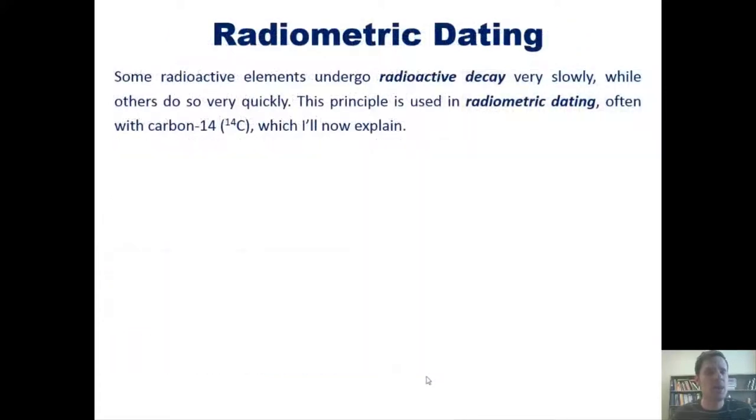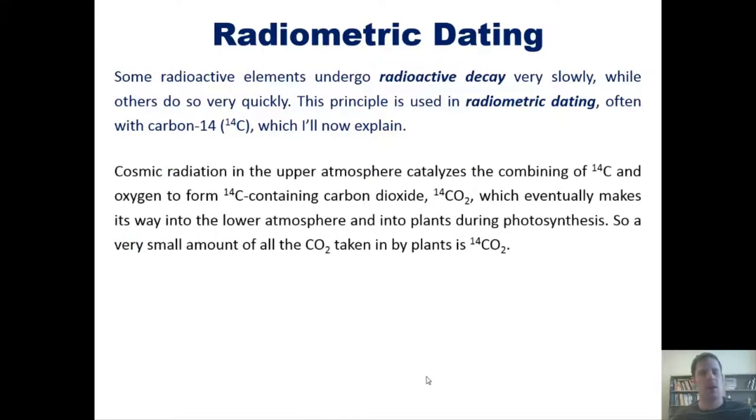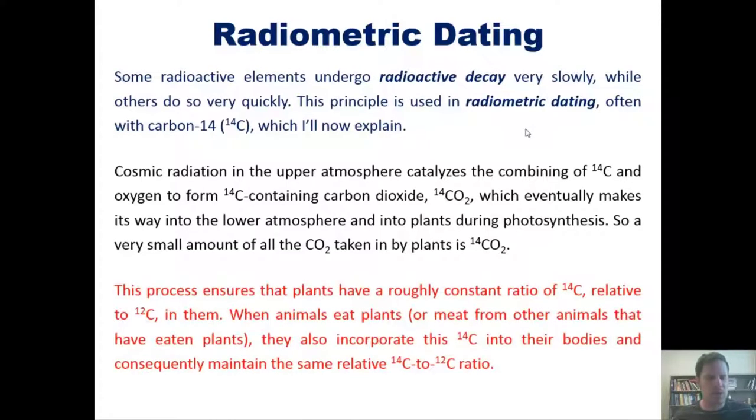Okay, now just so you know, some radioactive elements undergo radioactive decay very slowly, while others do so very quickly. This principle is used in radiometric dating, often with carbon-14 or C14, which I'll now explain. Cosmic radiation in the upper atmosphere catalyzes the combining of C14 and oxygen to form C14-containing carbon dioxide.